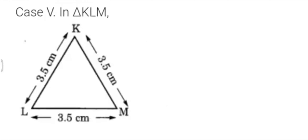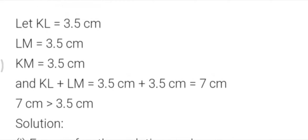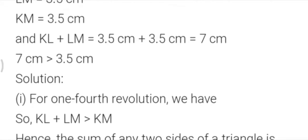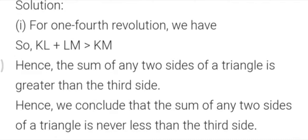Now case 5. In this I have drawn triangle KLM. KL is 3.5 cm, LM is 3.5 cm, and KM is 3.5 cm. KL plus LM equals 7 cm, which is greater than KM at 3.5 cm. The sum of two sides is greater than the third side again. Hence we conclude that the sum of any two sides of a triangle can never be less than the third side — it is always greater than the third side.